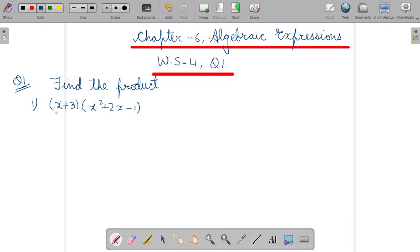So first term we will take and multiply this first term with all these three terms of trinomial. Then take second term and multiply with all the three terms of trinomial. So let's go for a question.